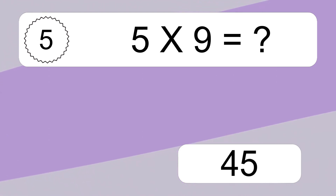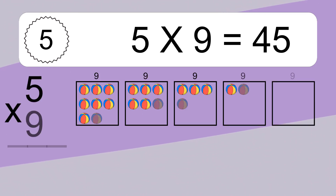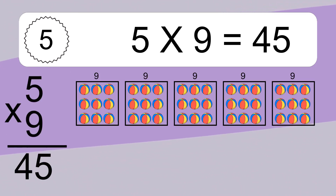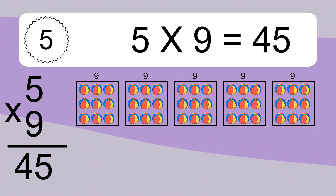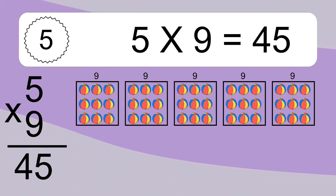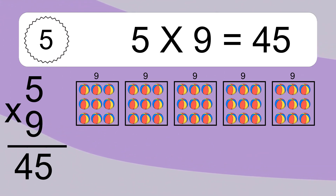5 times 9 equals what? 5 times 9 equals 45.